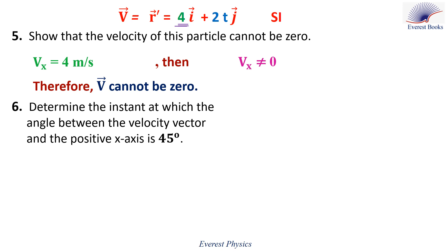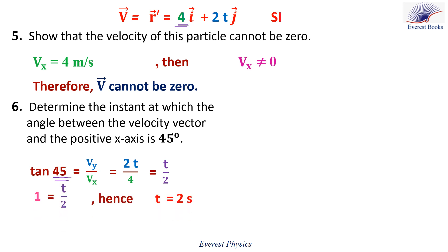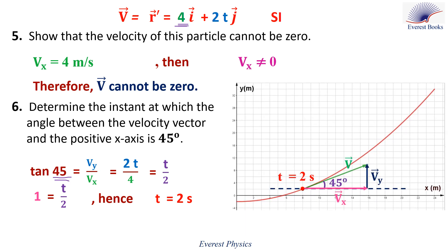Let's move to part six: determine the instant at which the angle between the velocity vector and the positive x-axis is 45 degrees. As seen in part two, to calculate the angle a vector makes with the positive x-axis, we use: tangent 45 equals the y-component of the vector over the x-component of the vector. The y-component of the velocity is vy equals 2t, and the x-component is 4. This gives tangent 45 equals 2t over 4, which equals t over 2. Since tangent 45 equals 1, therefore t equals 2 seconds. The velocity vector at time 2 seconds makes 45 degrees with the positive x-axis, as seen in the figure.